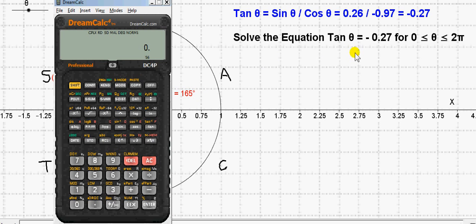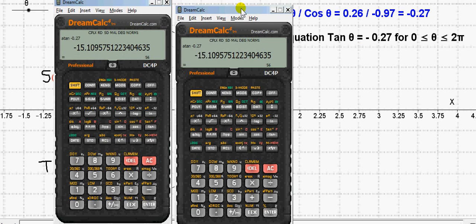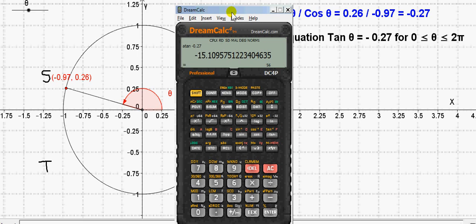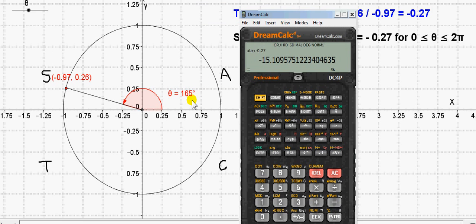Of course, your calculator will give you one solution to this equation. Just get inverse tan or arc tan of minus 0.27. Unfortunately, we get this answer here, which is not what I've shown on the diagram. It doesn't correspond to 165 degrees, but let's just note it down.